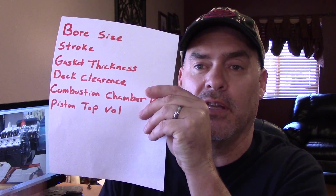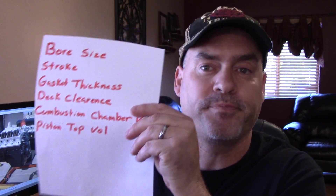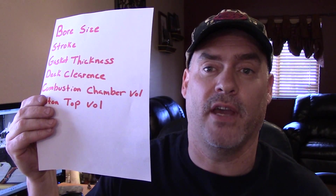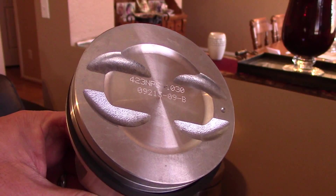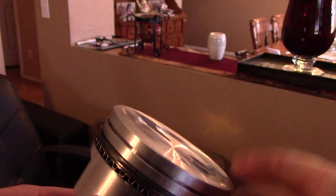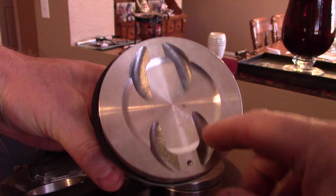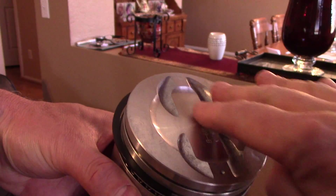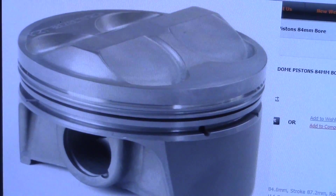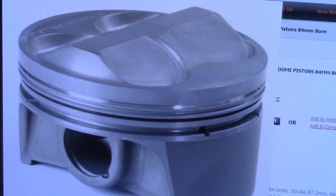Another factor is piston top volume. You can see there's a difference between these three pistons — they each have a different volume depending on their configuration. This is a flat top piston; it has four valve reliefs but it's essentially flat. We can contrast that with a dish piston, which also has four valve reliefs but has a dish in the top — this whole area is dished out, making it a lower compression piston. And then we have the dome piston, which has a pop-up or dome on top, which raises the compression ratio.